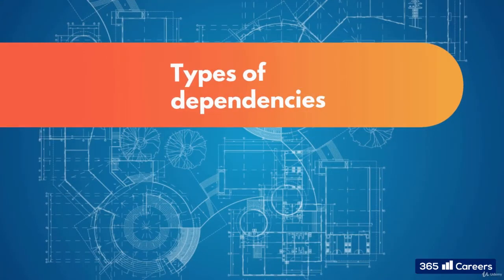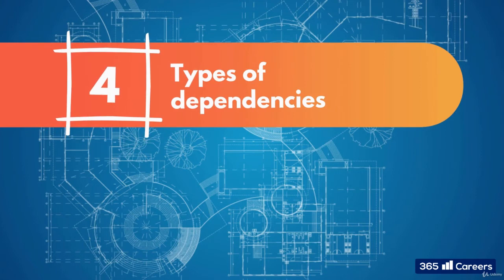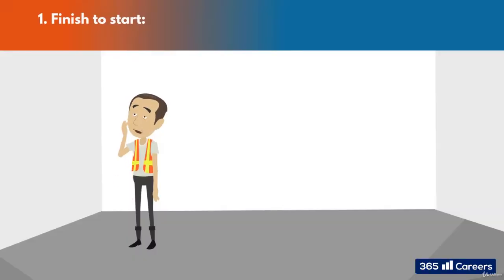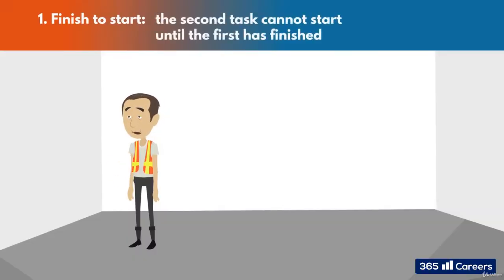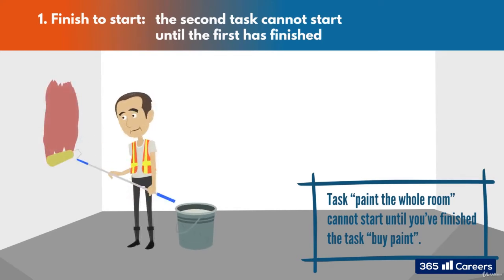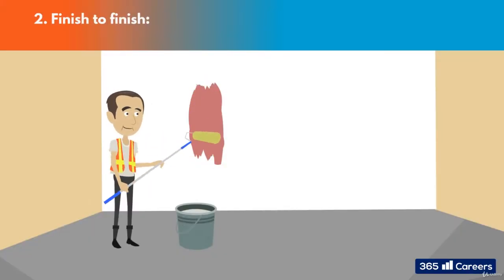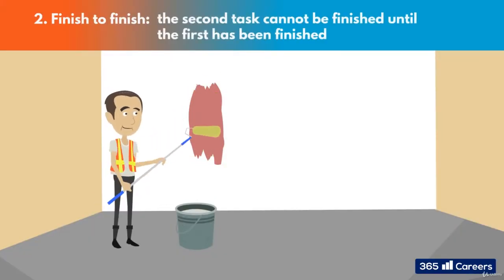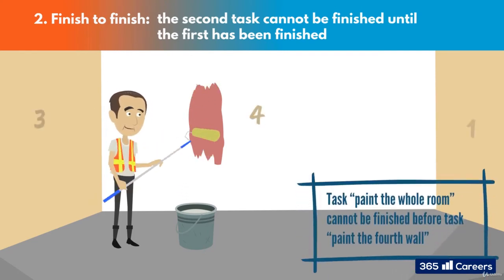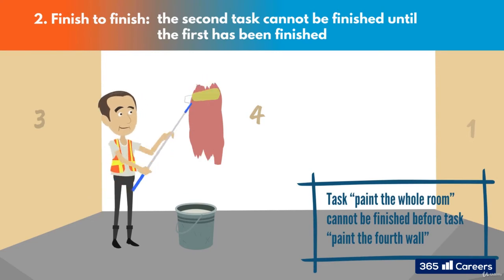Now let's have a look at the types of dependencies — four again is the magic number here. First we have finish to start, where the second task cannot start until the first has finished. The task 'paint the whole room' cannot start until you finish the task 'buy paint.' Second, there is finish to finish, where the second task cannot be finished until the first has been finished. The task 'paint the whole room' cannot be finished before the task 'paint the fourth wall' is fully finished.